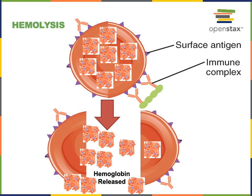Hemolysis refers to the breakdown of erythrocytes in the blood, and this is another mechanism contributing to lethal transfusion reactions. When a patient is given a transfusion with blood that contains antigens not normally found in their blood, their antibodies will bind to those antigens and stimulate other defense proteins called the complement proteins, which form a membrane attack complex that punches holes in the plasma membrane, causing the cell to rupture. When this occurs to an erythrocyte, hemoglobin spills out from the cytoplasm into the blood plasma and will damage the kidney, leading to kidney failure, which contributes to the lethal effects of a transfusion reaction.